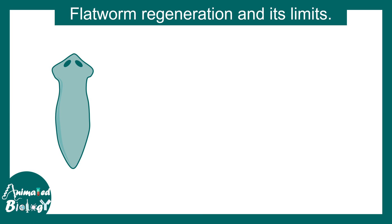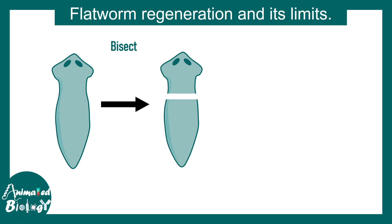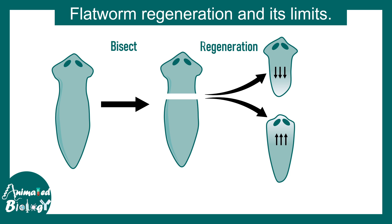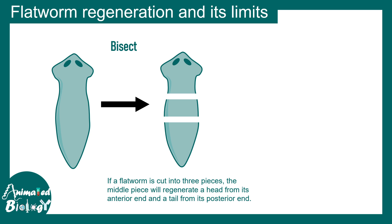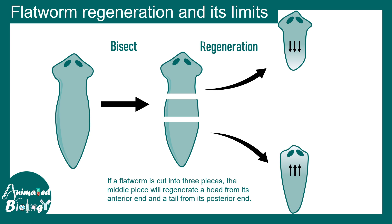This is how a planaria looks — the upper part is the anterior segment with two eyes, and the lower part is the tail. In an experiment, if you bisect a planaria into two halves, each half regenerates to form an entirely new organism. In another experiment, if you cut planaria into three segments — upper, middle, and lower — the upper and lower segments each regenerate into a complete organism.